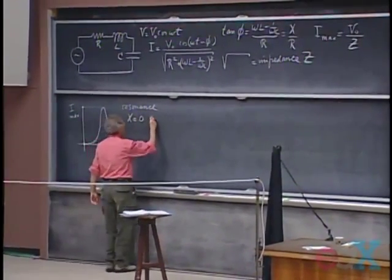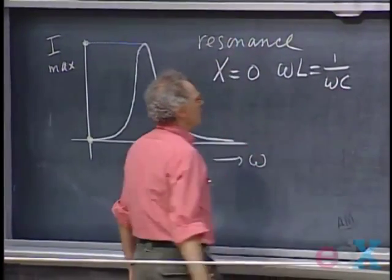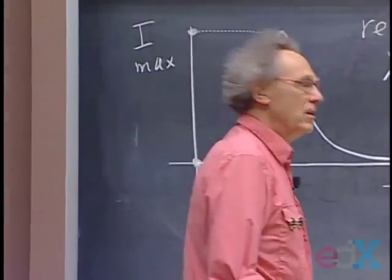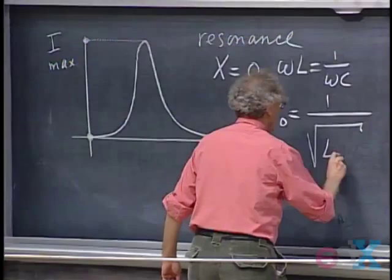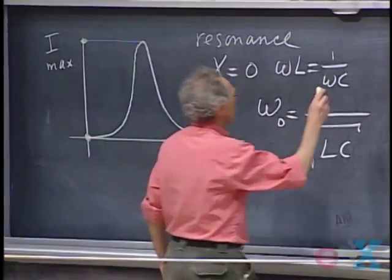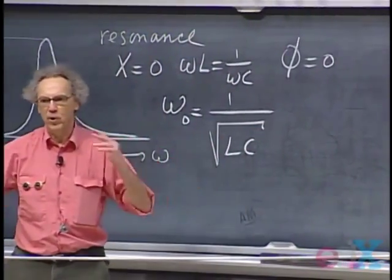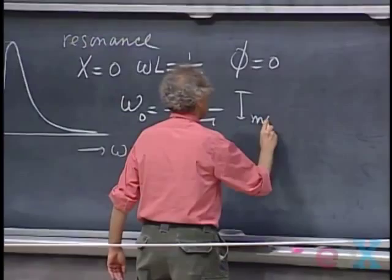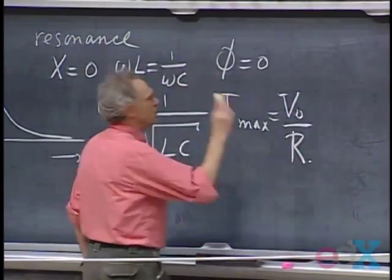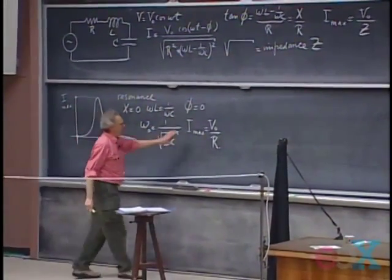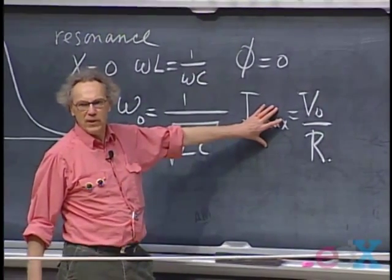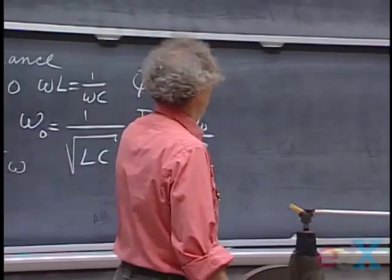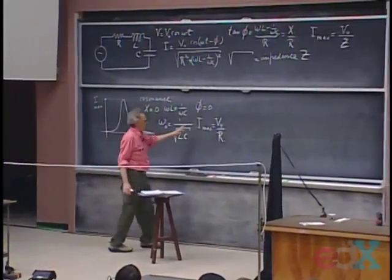When X equals zero, omega*L equals 1/(omega*C), so the resonance frequency omega_0 is 1/sqrt(LC). At resonance, phi becomes zero — there is no phase delay between current and driving voltage, they are in phase. The value for I_max becomes simply V_0 divided by R, because the impedance itself becomes R. At resonance, the self-inductance and the capacitor annihilate each other, and the system behaves as if there were only a resistor.